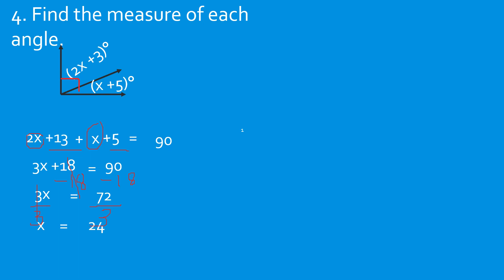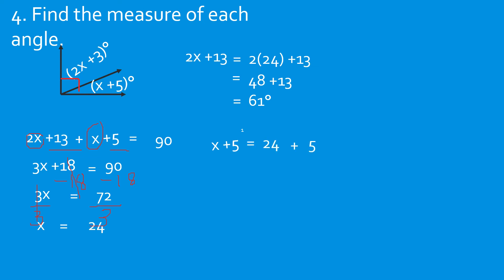We have x = 24, but we're not done yet. We substitute back: 2x + 13 = 2(24) + 13 = 48 + 13 = 61 degrees. And x + 5 = 24 + 5 = 29 degrees. To check: 61 + 29 = 90 degrees. Correct! That's how you solve when the given is an algebraic expression.